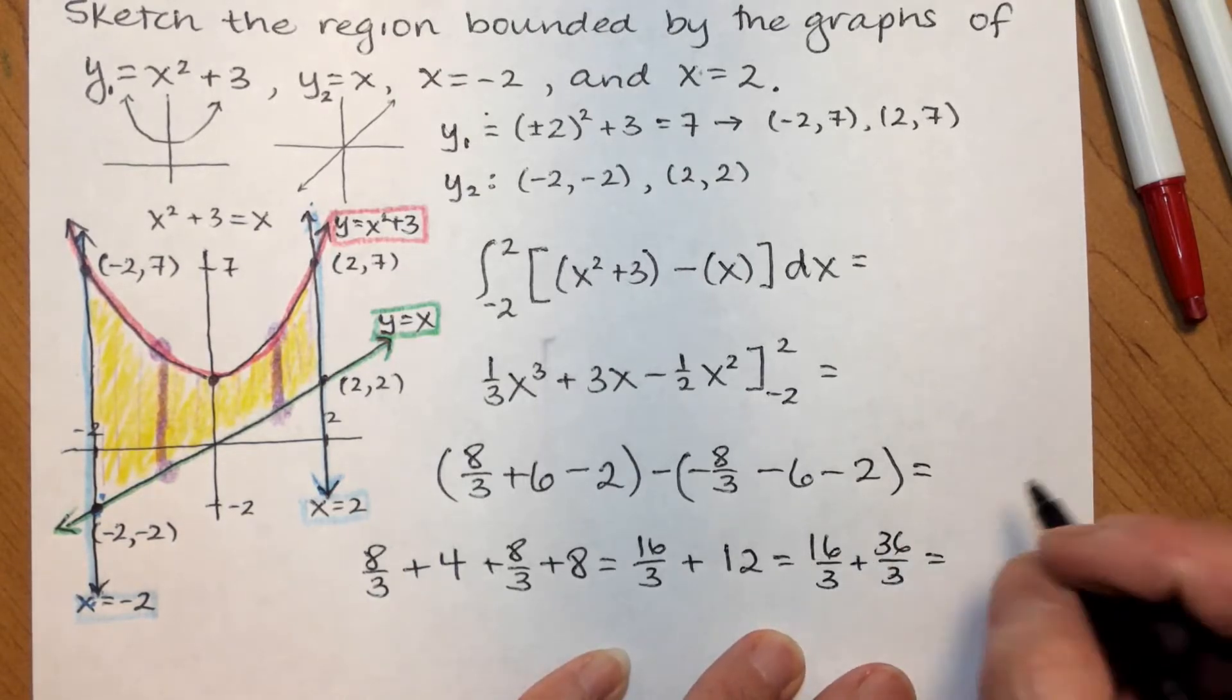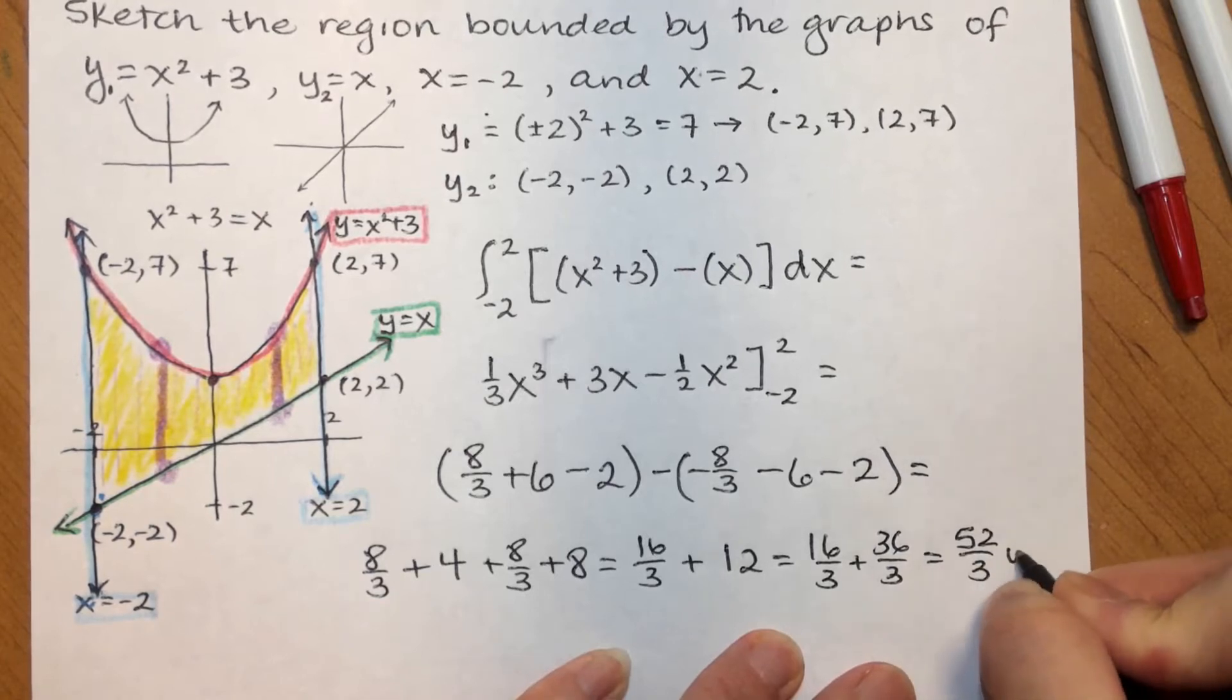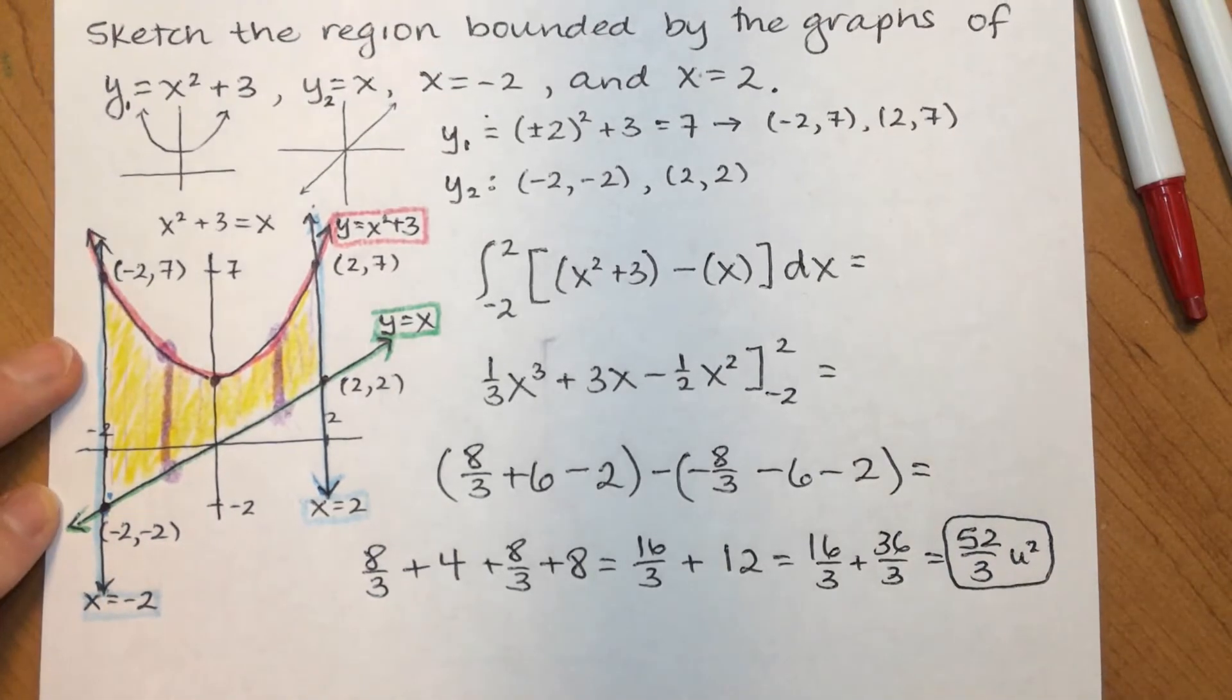Is that right? 30, 40. 52 over 3 units squared. And, that is the area of my shaded region.